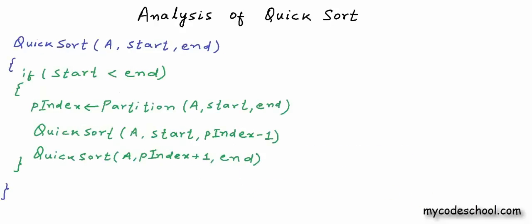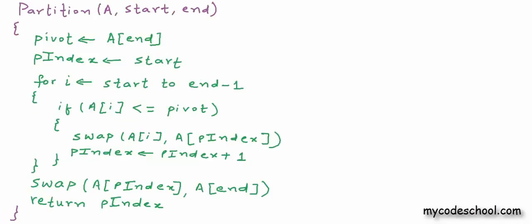This is the pseudocode for the quicksort function we had written earlier. Let's calculate the running time. The first statement is the if-condition — a simple statement with constant cost c1. If we go inside the if-condition, we have a call to the partition function. This is not a simple statement, so we first need to figure out the running time of the partition function. In the partition function there are some simple statements and one for loop.